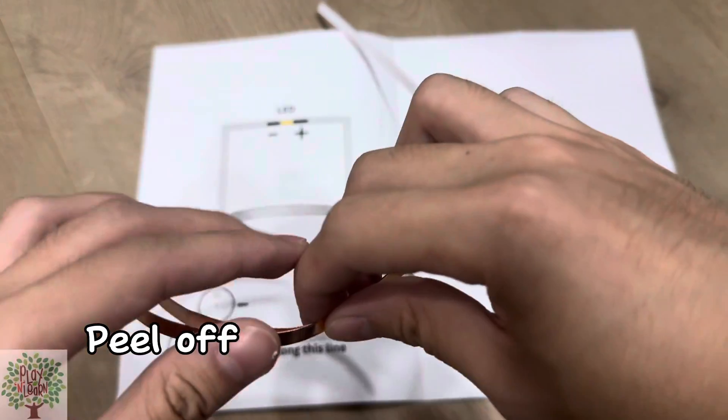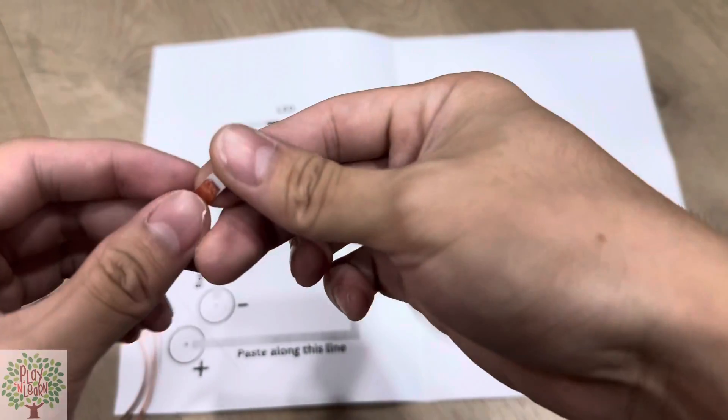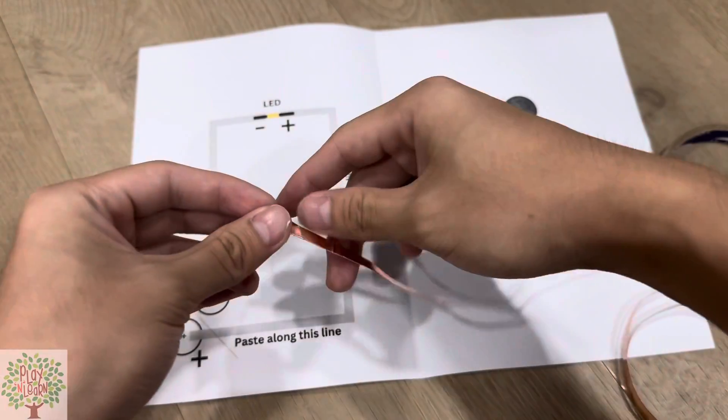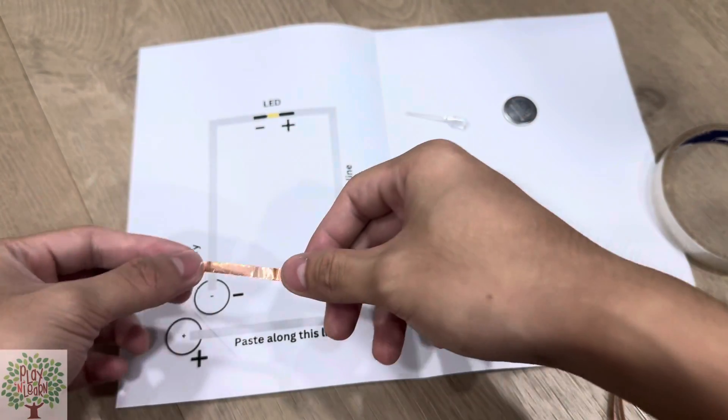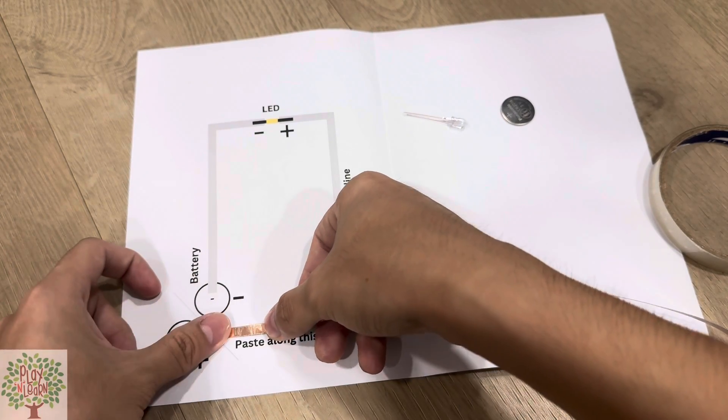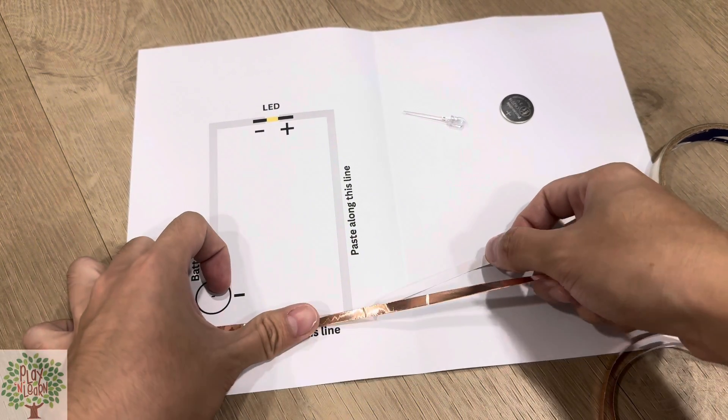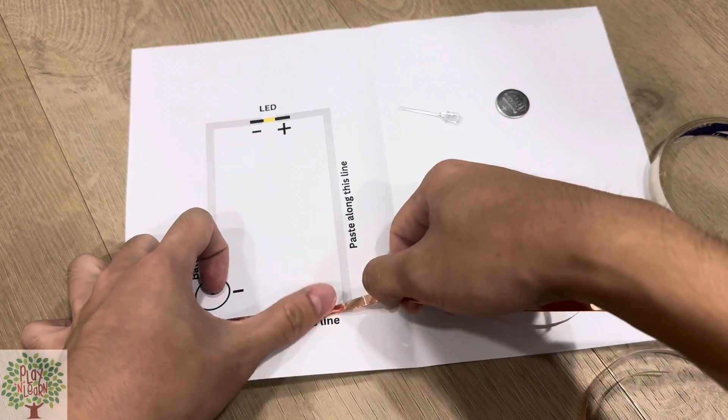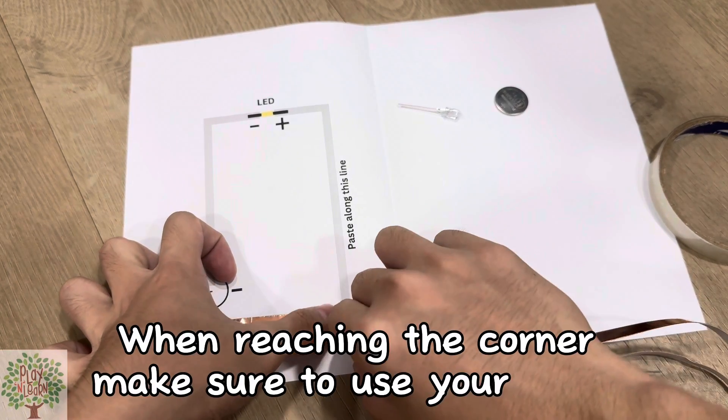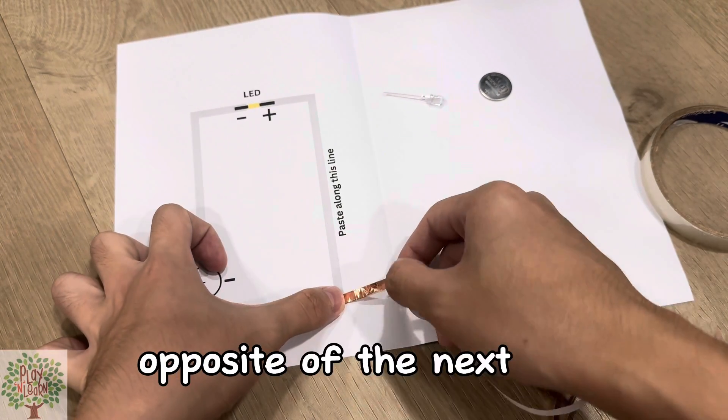So first step, peel off the copper tape and paste it along the line. When reaching the corner, make sure to use your finger to fold the copper tape diagonally into half opposite of the next line.